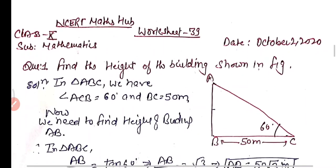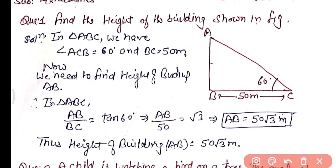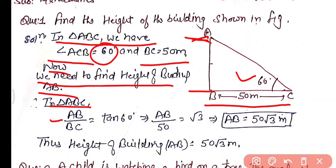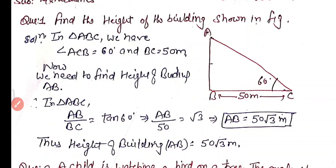Practice Question 1: Find the height of a building as shown in the figure. The base distance BC = 50 meters and the angle of elevation is 60°. In triangle ABC, using AB/BC = tan 60°, we get AB/50 = √3, so AB = 50√3 meters. The height of the building is 50√3 meters.